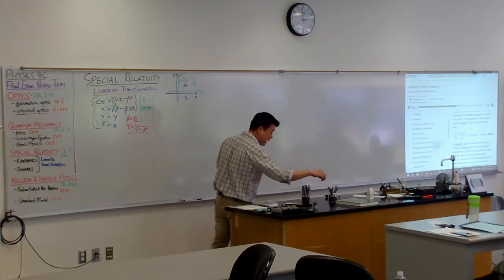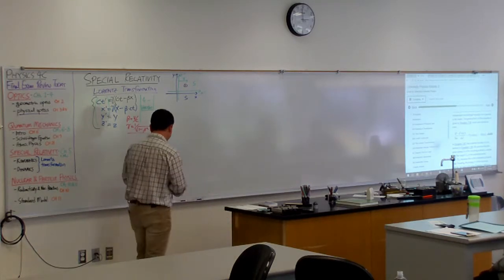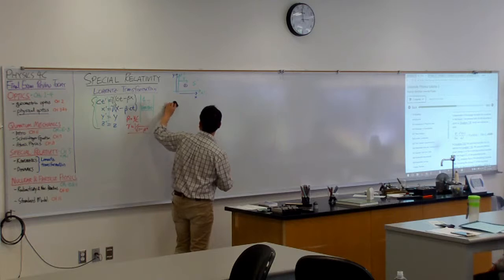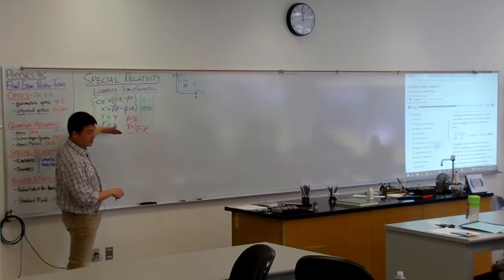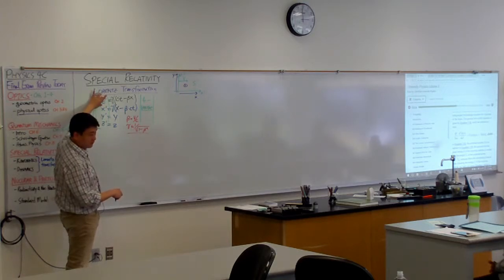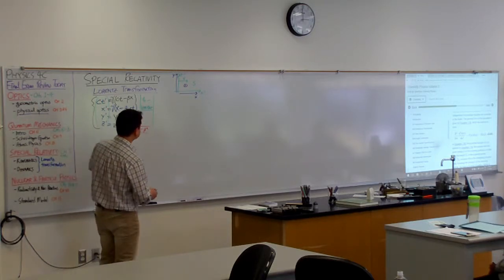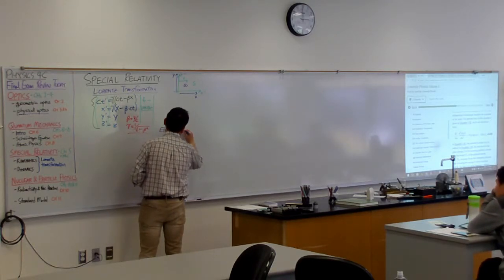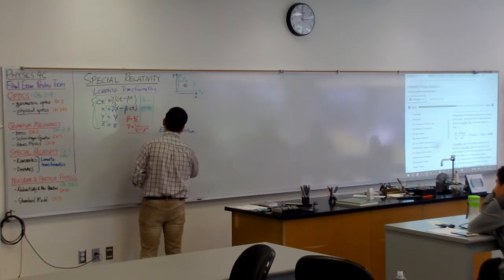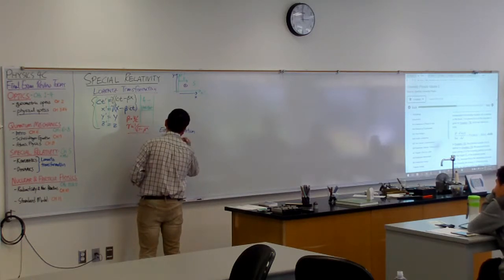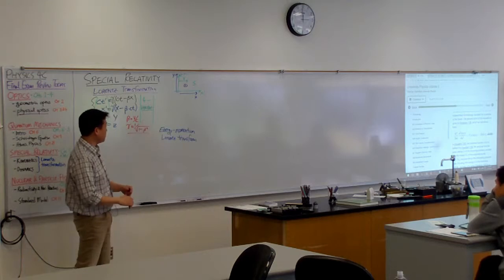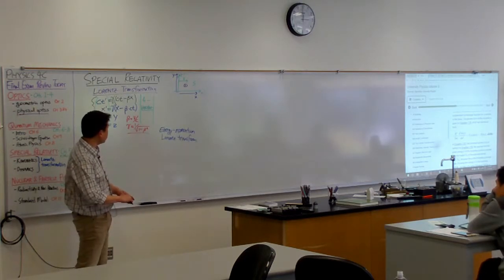But what we did introduce and what we did use is the idea of four momentum. This is the energy and momentum combined into a quantity like this. It turns out energy takes the time coordinate and the three components of momentum takes the position coordinate. So, you can describe transformation of energy and momentum by Lorentz transformation.